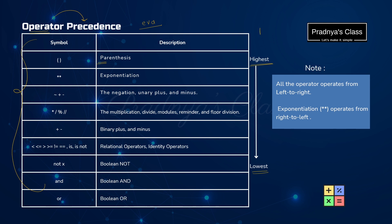To remember the sequence of precedence, we create the word PEARL. P is for parenthesis, E for exponentiation, A for arithmetic operators — with two levels: first level has multiplication, division, floor division, and modulus; second level has plus and minus. R is for relational operators, and L is for logical operators. Among logical operators, 'not' has higher priority, followed by 'and', and lastly 'or'.